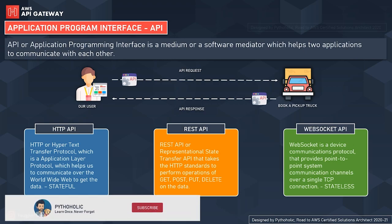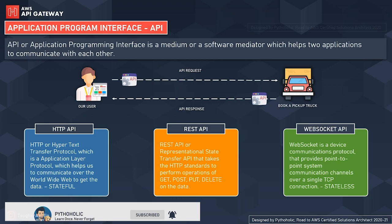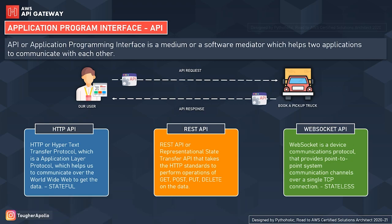REST APIs are one-way communication based on the request-response or client-server model. WebSocket APIs use TCP, which is a full duplex two-way communication channel. Unlike HTTP or REST, we don't wait for the client's request or the server's response. Here, the client and server talk independently to each other over a single TCP connection. These three API types — HTTP, REST, and WebSocket — are the ones AWS API Gateway lets us create, manage, and secure.